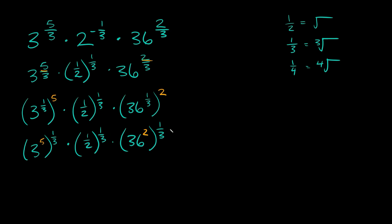So now you can see we have all the same exponents on the outside. Now since we do have the same exponents, all we have to do is multiply all the bases together and then raise it to this exponent once. So we can rewrite this as 3 raised to the 5th power times 1 half times 36 squared. And that's all going to be raised to the same power, 1 third.